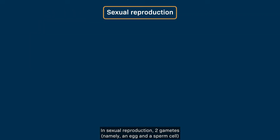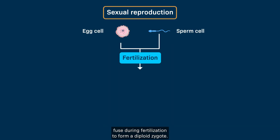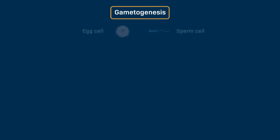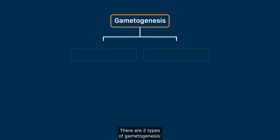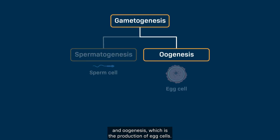In sexual reproduction, two gametes, namely an egg and a sperm cell, fuse during fertilization to form a diploid zygote. Gametes are formed through the process of gametogenesis. There are two types of gametogenesis: spermatogenesis, which is the production of sperm cells, and oogenesis, which is the production of egg cells.